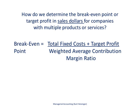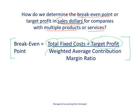Now we are going to change the focus to finding the break-even point or target profit in sales dollars. This can be for companies that have multiple tangible products like kayaks, or a company that offers services. The equation for finding the break-even point in sales dollars is the total fixed cost plus the target profit, divided by the weighted average contribution margin ratio. We'll look at a company that has accounting services to show how this works.